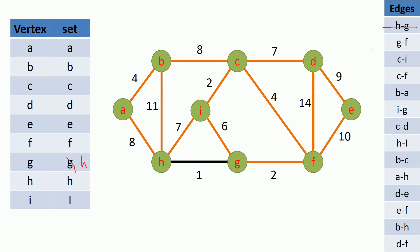The next remaining minimum weighted edge is the edge between G and F vertices. G vertex currently belongs to set H and F vertex currently belongs to set F. So these two vertices are in different sets, so we can add this edge to our MST. Then we are going to union the sets by changing F vertex set to H.